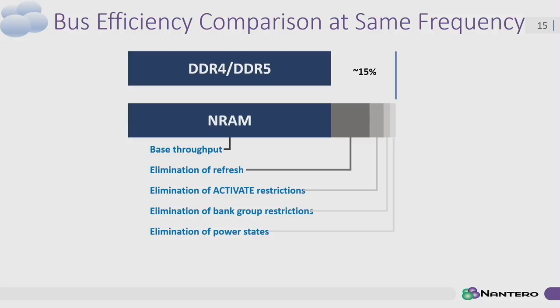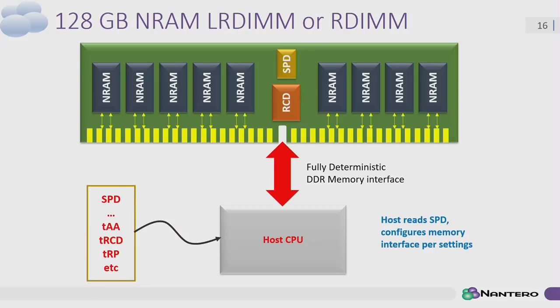At the system level, you can simply build standard memory modules — unbuffered DIMMs, registered DIMMs, load-reduced DIMMs. Take the DDR4 chip out, put the NRAM in, and it just works. The timing parameters are programmed into the SPD on every memory module; the system reads that and just runs. It's true plug-and-play with no change in software.